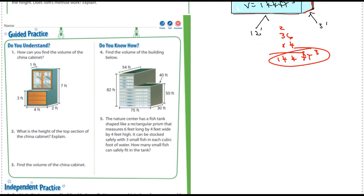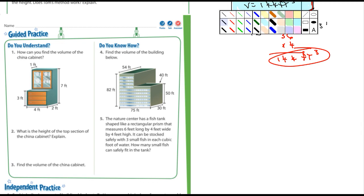Okay, on the guided practice, how can you find the volume of the china cabinet? What is the height of the top section of the china cabinet? Well, this would be the top section right here, and they're asking for the height. Let me just point out something to you: the entire height is seven, they give us that, and then they give us this section right here, which is three feet.